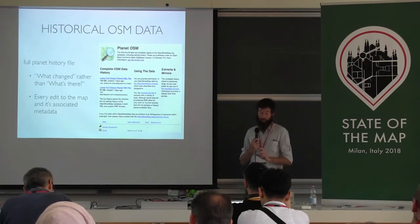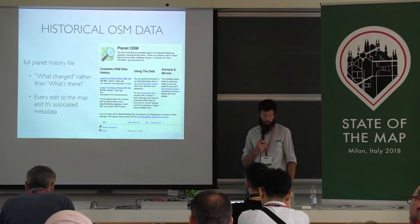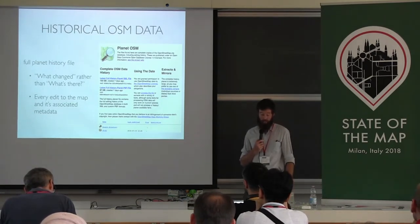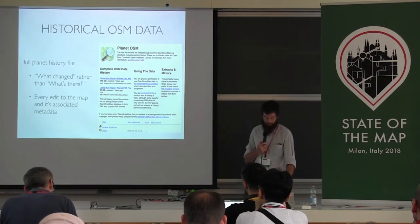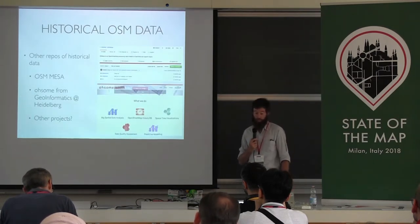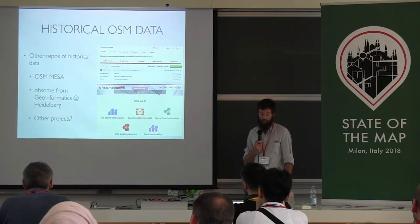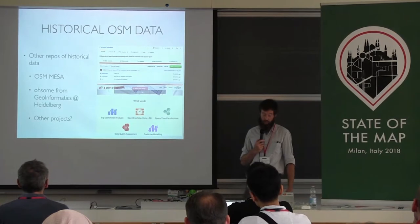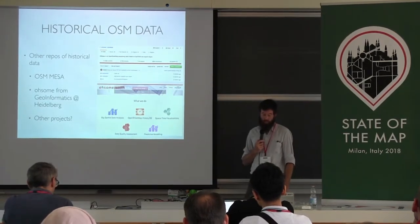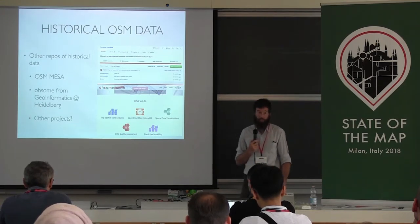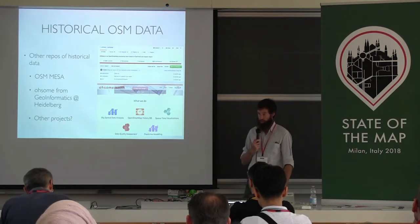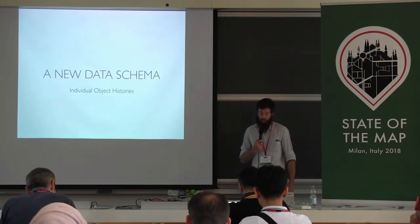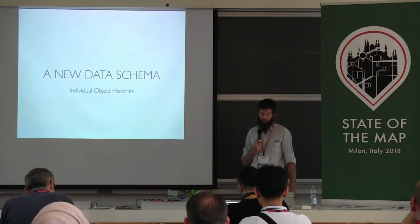Now I'll transition into my current approach to solve this problem. The first step is to make sure we have all the information we need to reconstruct the development of the map. For this, I currently use the full planet history file. At the edit level, we're most interested in what changed on the map rather than what's on the map. The number of historical OSM data sources is growing — projects like OSM Mesa and Awesome from Heidelberg provide new ways to process and analyze historical data. I see this as a great time to adopt and standardize specific OSM data analysis language and schemas to represent change in the map. If we're all measuring the same indicators, we can better share and interpret our results.